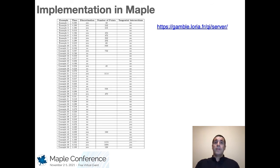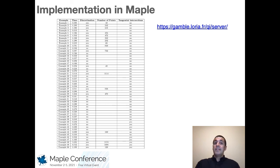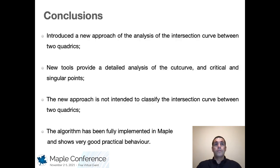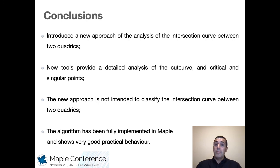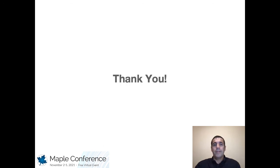We have implemented this algorithm on 50 examples taken from the cited authors' webpage as a way to test the effectiveness of our algorithm. The results obtained are quite satisfactory. With our algorithm, we can identify the cases where tangential intersection of the quadrics exists, and the execution time can still be improved with an optimization of the number of points chosen during the discretization. To complete, we introduced a new approach to analyze the intersection between two quadrics. New mathematical tools were provided for the analysis of the cut curve and the computation of critical and singular points, in an approach that did not intend to classify the intersection curve of the two quadrics. This algorithm has been implemented in Maple and shows very good practical behavior. Thank you for your attention.